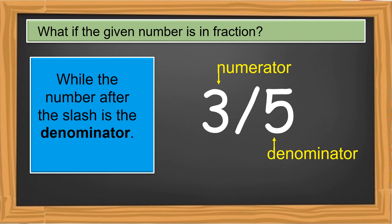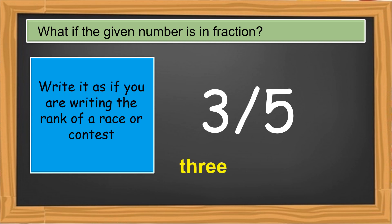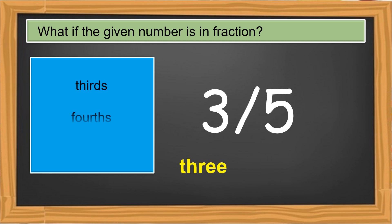To express the fraction in words, write the numerator spelled out in words exactly as it appears as a numeral. We have the number three as numerator, so we write it as 'three.' For the denominator, write it as if you are writing the rank of a race or contest — such as third, fourth, fifth — but in plural form: thirds, fourths, fifths.